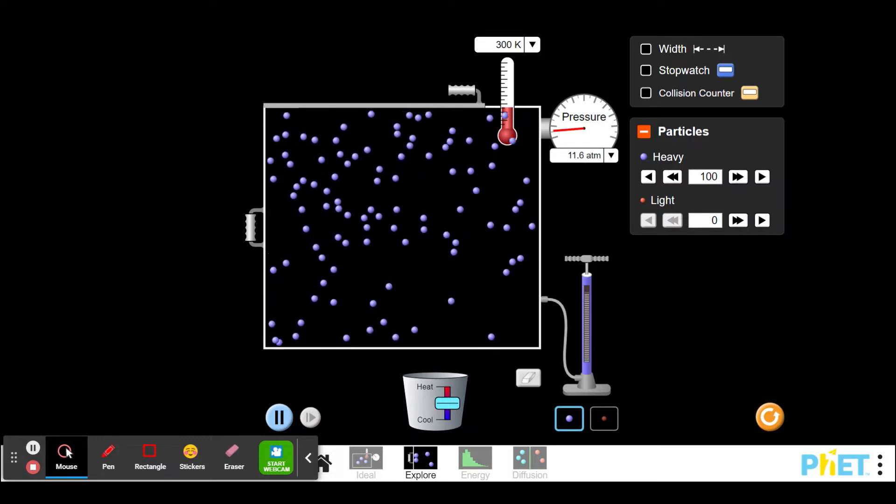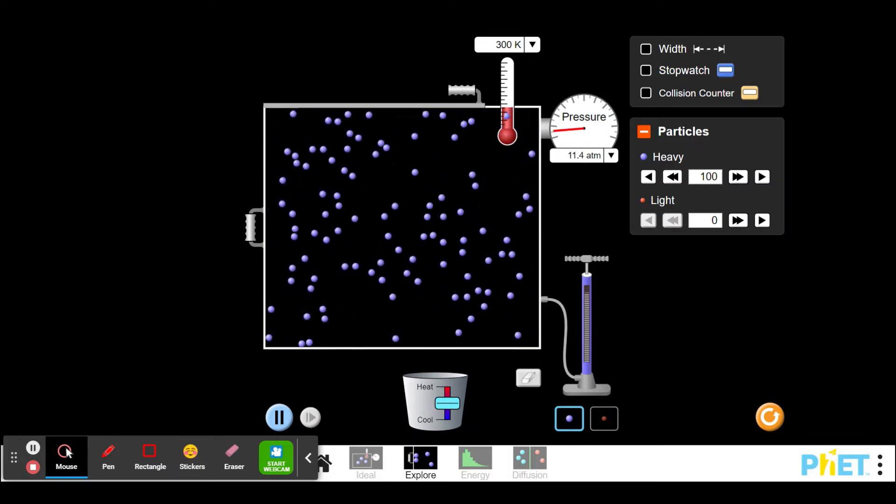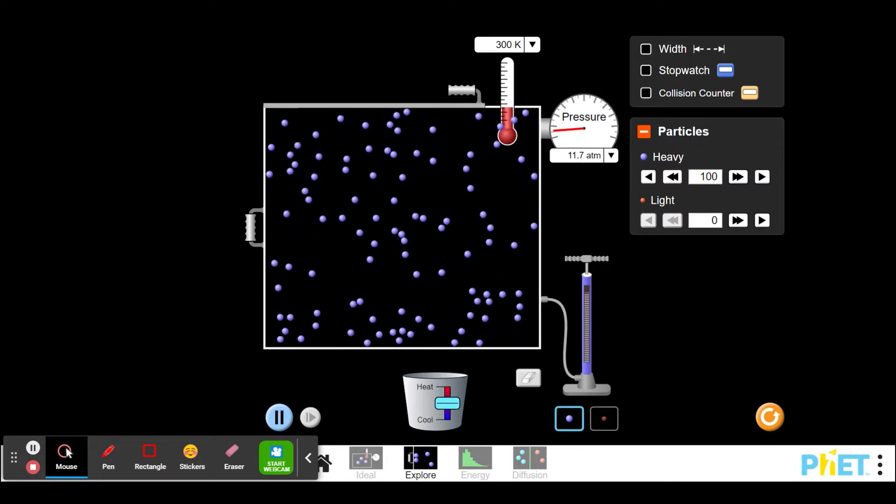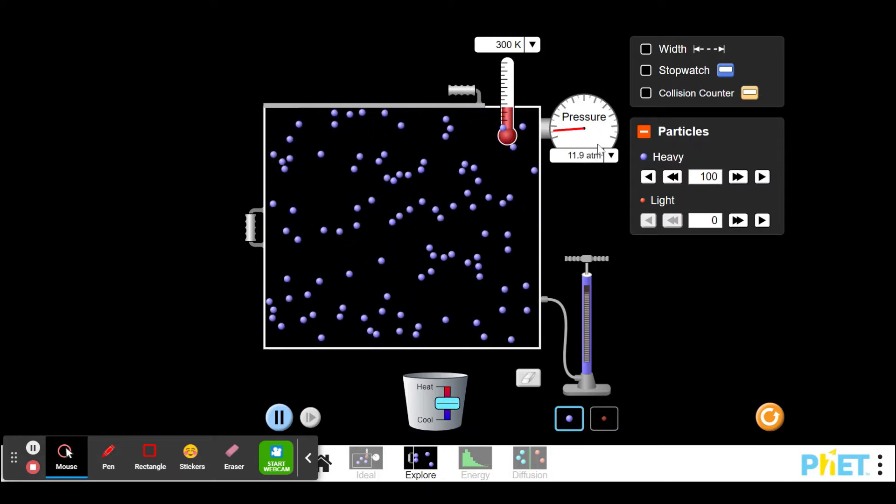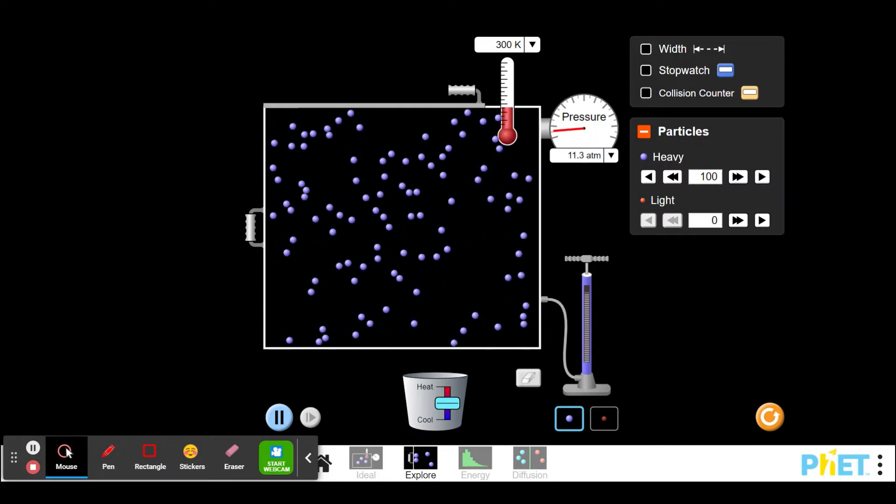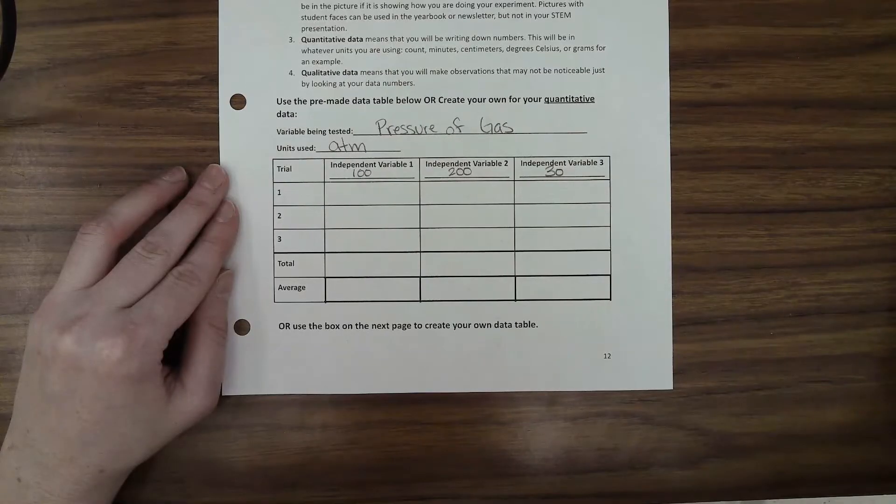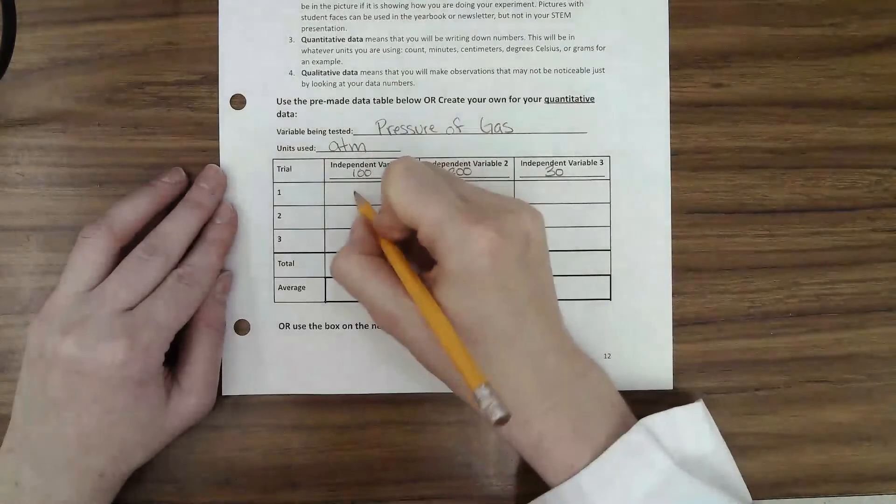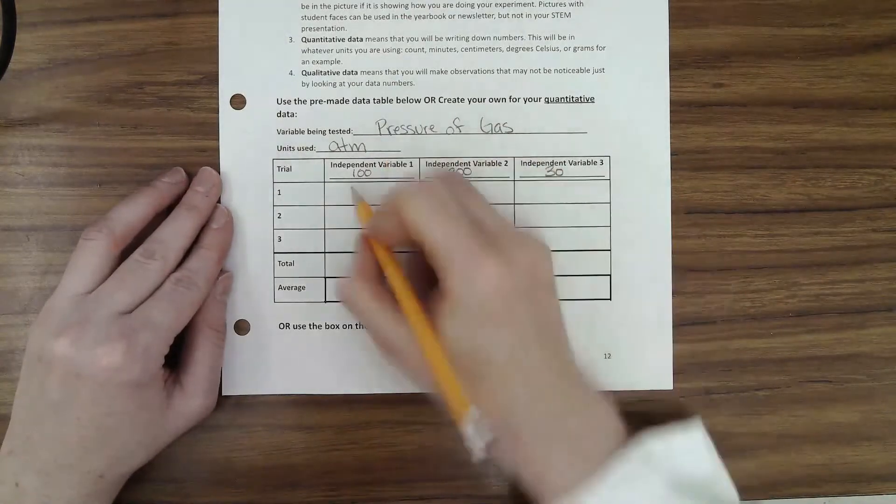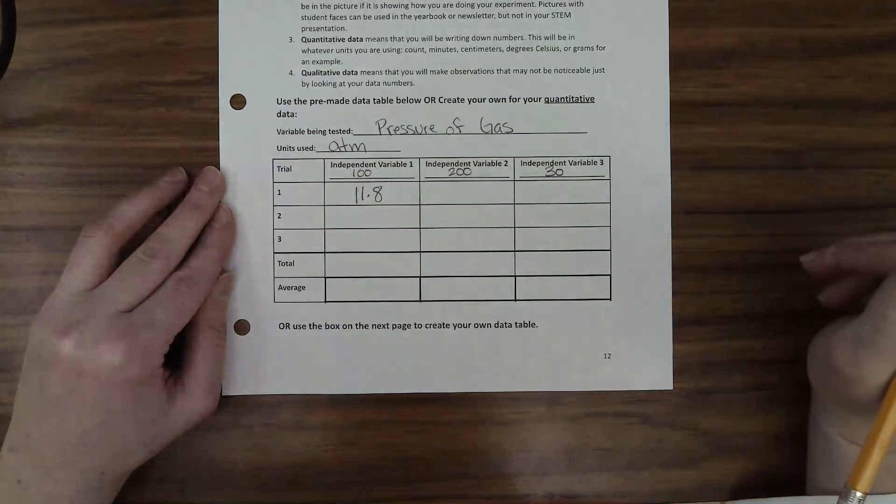I'm going to wait for that to kind of equalize and then I'm going to measure the pressure. Right now I'm seeing a pressure of 12, 11.3, 11.6, somewhere in there, and it's looking like my average is right around high 11 point something. So maybe 11.8. So on my chart here I'm going to put 11.8 because that's about the average of my pressures.